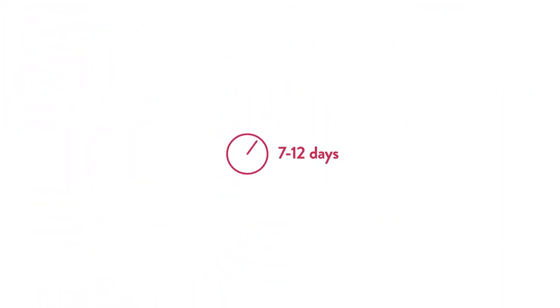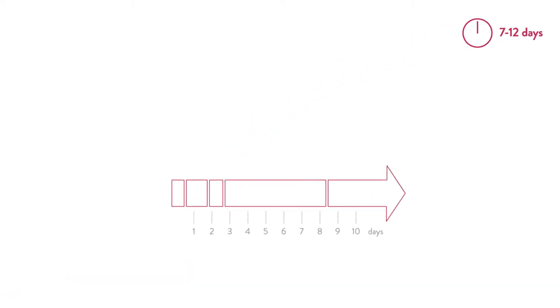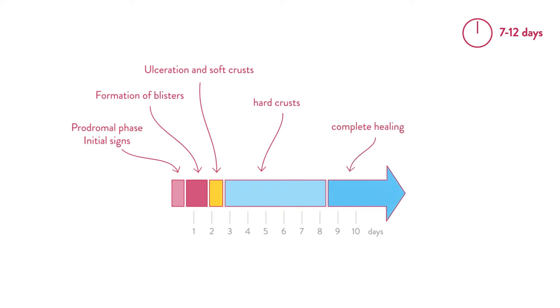A cold sore outbreak usually lasts 7-12 days and generally runs through 5 different phases: itching and tingling, blisters, wetness, crusts and the final phase.